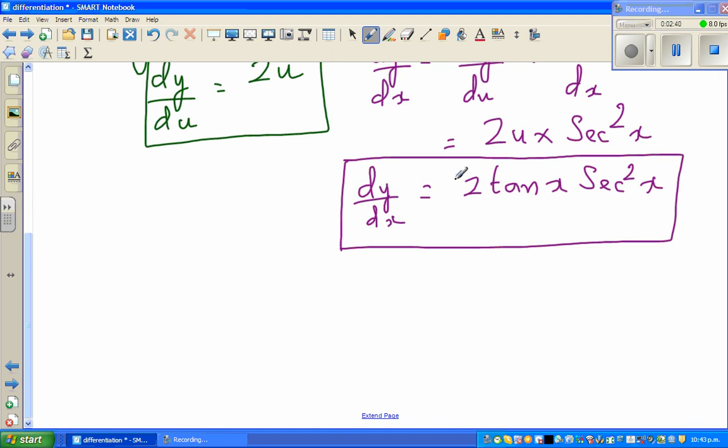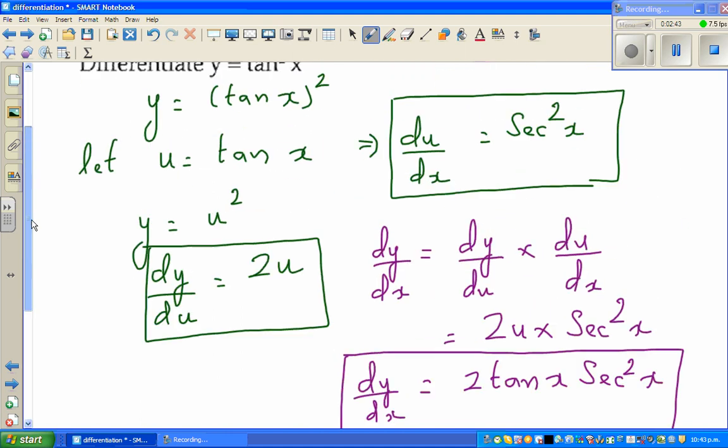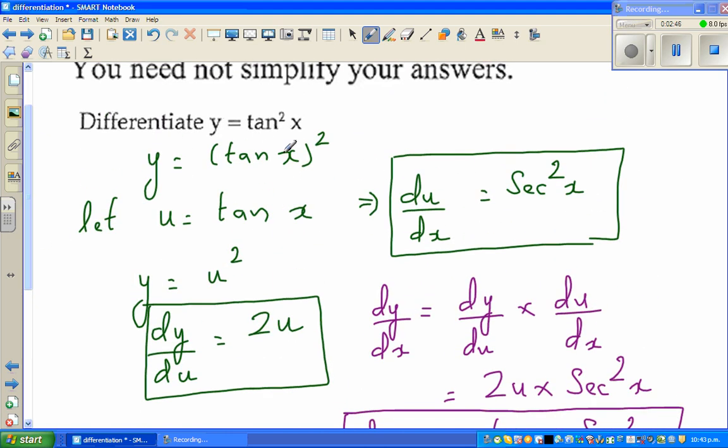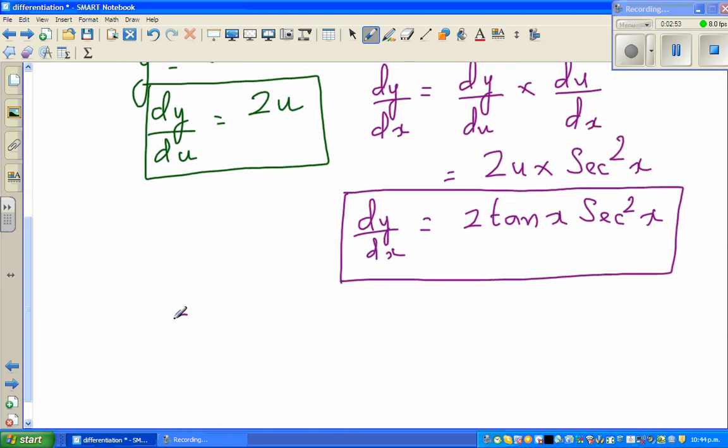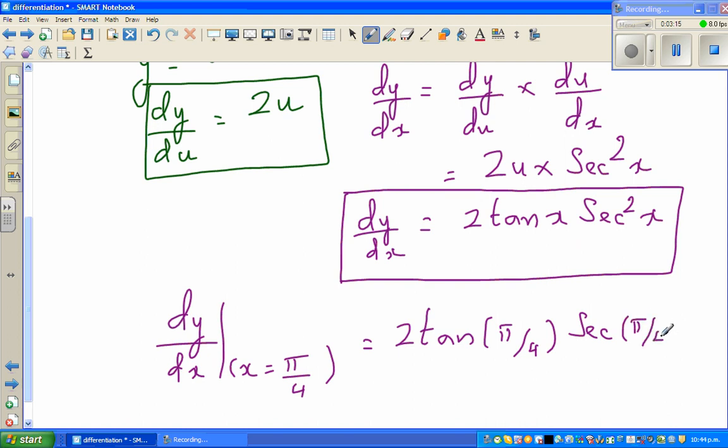So I'll take any arbitrary value which is defined at this function. So tan pi by 4, that is tan 45 is defined. So I'll take x as pi by 4. So this is dy by dx at x equals pi by 4, which is 45 degrees, which equals 2 tan pi by 4 times sec pi by 4 squared.